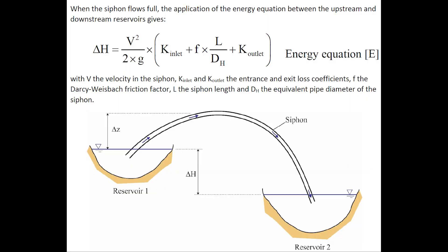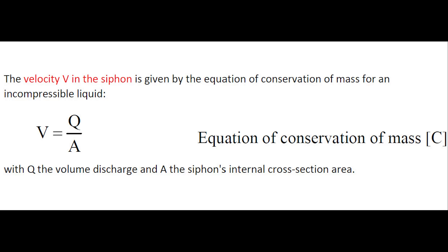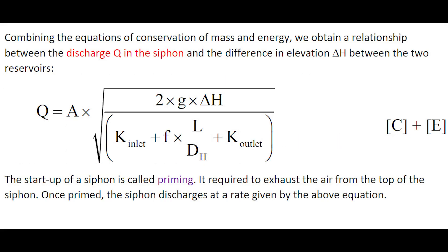When the siphon flows full, the application of the energy equation between the upstream and downstream reservoirs gives a relationship between the velocity in the siphon and the head difference, delta h, vertical head. The velocity v in the siphon is given by the equation of conservation of mass for an incompressible fluid. On combining the equations of conservation of mass and conservation of energy, we obtain a relationship between the discharge of the liquid in the siphon and the difference in vertical elevation, delta h, between the two reservoirs.